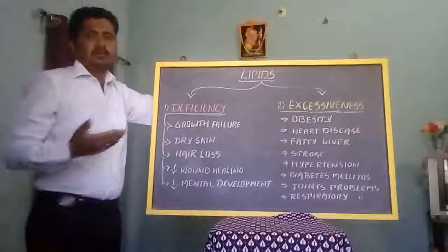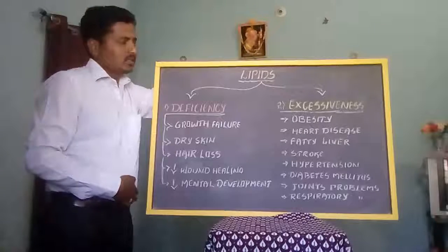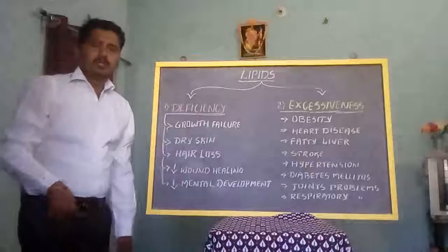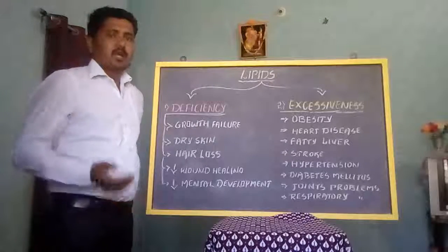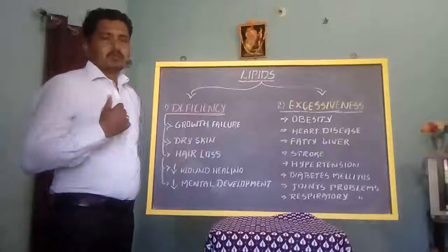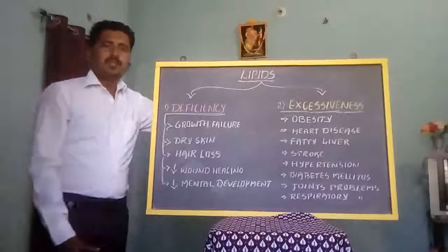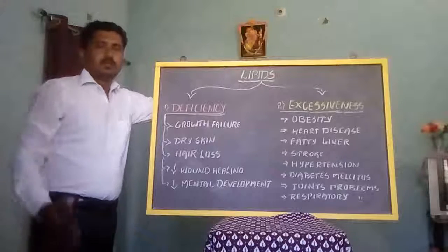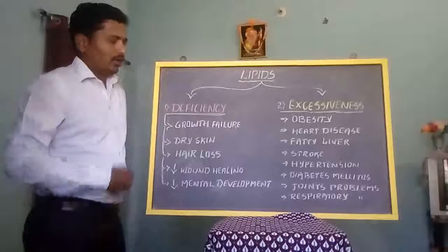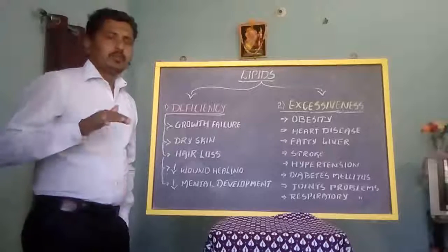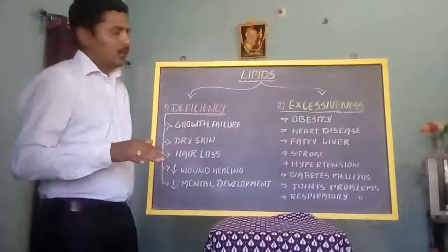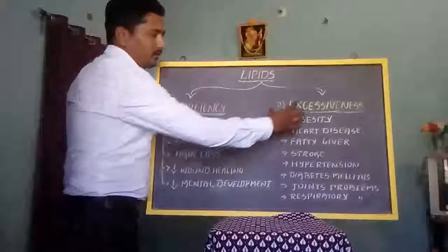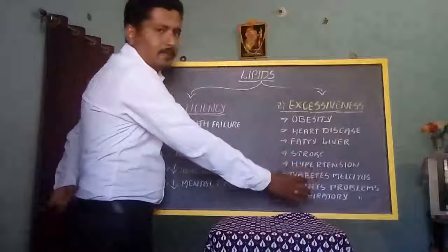Next is type 2 diabetes mellitus, which is age-related and more common as a result of excessive consumption of fat. Next, there are joint problems — mobility problems, arthritis, walking difficulties, and stiffness in the joints. Finally, respiratory problems arise. In obese persons, diaphragmatic movement becomes hampered or problematic, leading to breathing problems. These are the disorders or diseases related to excessiveness of lipids.